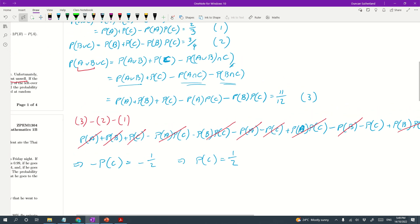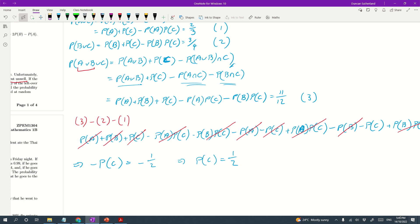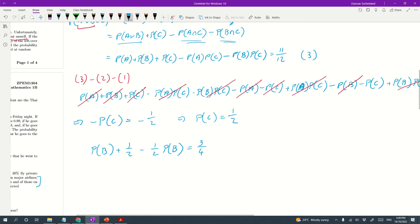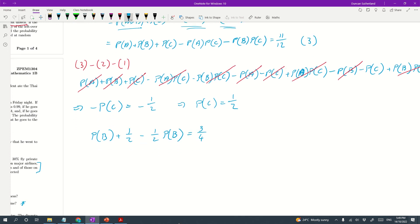And if we put PC, the known value into this equation, we've got PB plus a half minus a half PB equals three fourths. So this lets us simplify. We've got a half PB equals a quarter. So PB is apparently a half. Let me just check that I haven't made a mistake. I have not.